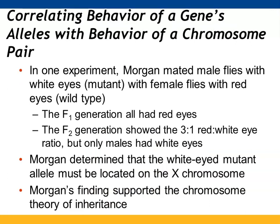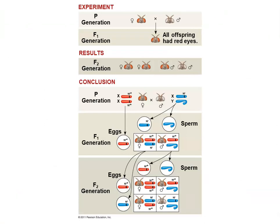Morgan mated male flies with white eyes with wild-type red-eyed females, and all offspring — male or female — had only red eyes. When those offspring were mated, they produced the expected 3-to-1 ratio, but only the males had white eyes. Since only males could have white eyes, the eye color gene had to be present on the X chromosome, and females weren't getting both copies of the mutant allele. This provided support for the chromosome theory of inheritance, showing allele behavior in F1 and F2 generations from both male and female perspectives.